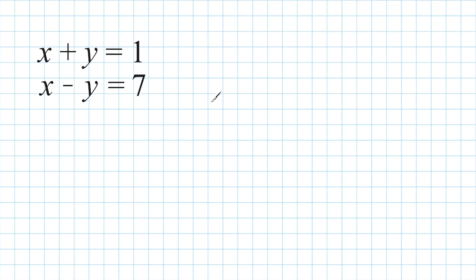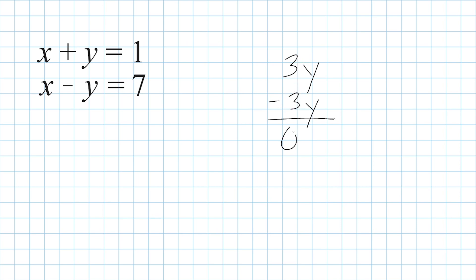The elimination method is basically taking our two equations and getting rid of, or eliminating, either the x variable or the y variable. Basically what we're doing is turning the coefficient of those variables into zero. For example, if we had 3y, to turn that into zero we would have to do minus 3y. The coefficient would have to be opposite, resulting in zero y, and anything times zero is zero — so we would have no y value. Our goal with a system of equations is to eliminate either x or y, leaving us with one variable that we can solve.